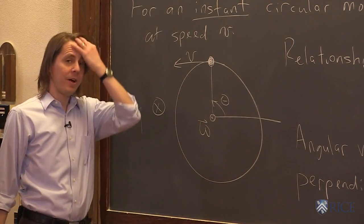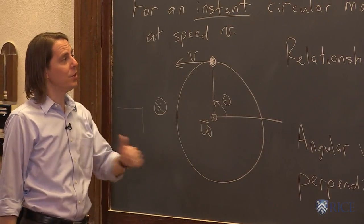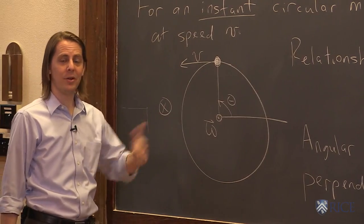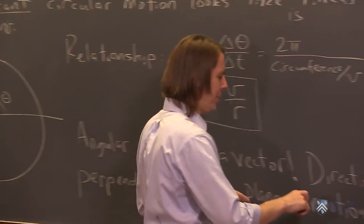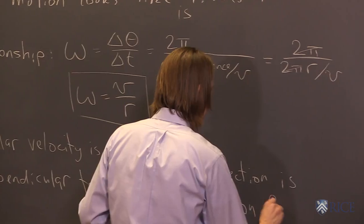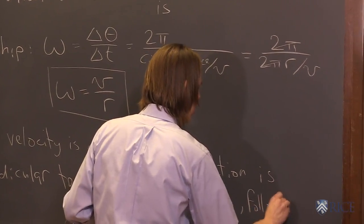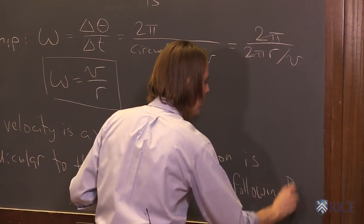The only other thing to specify is does the vector omega come out of the board or into the board? Which one is it? And then we follow the right-hand rule. So the direction is perpendicular to the plane of motion following the RHR. So we have a lot of right-hand rules in physics, and this is one of them.